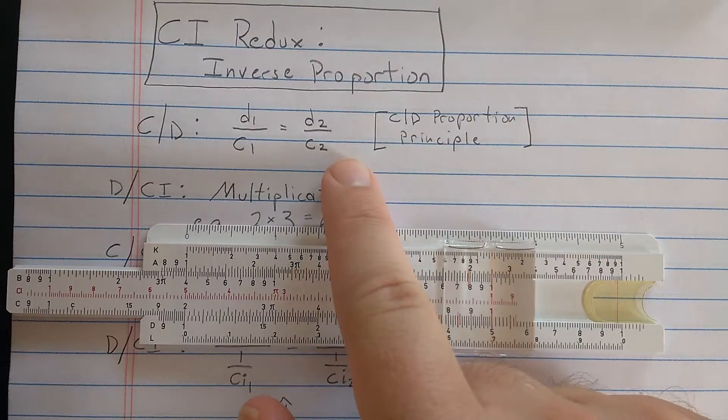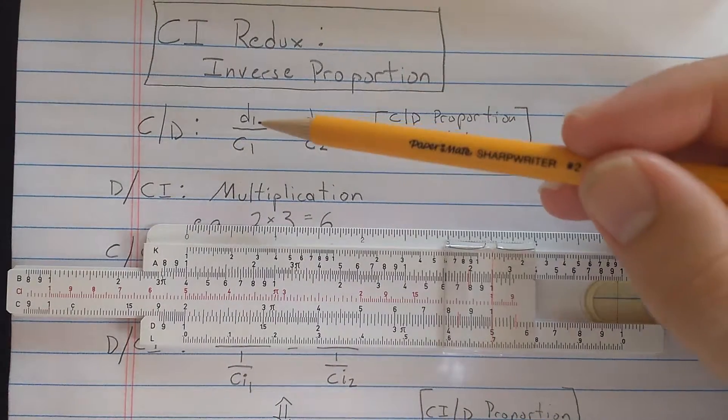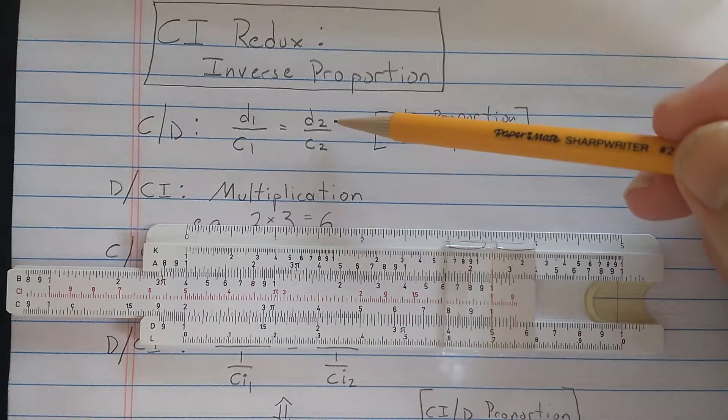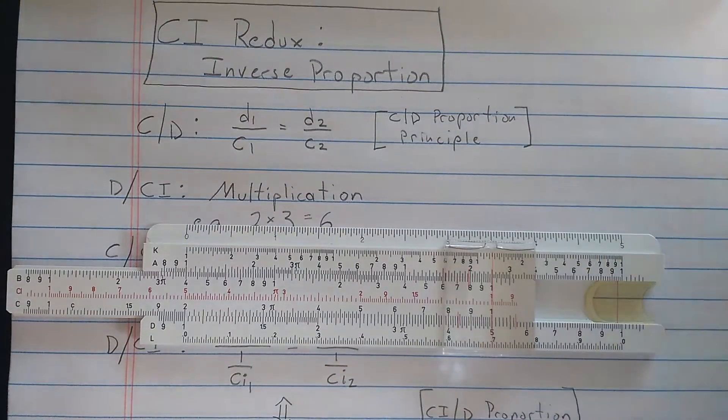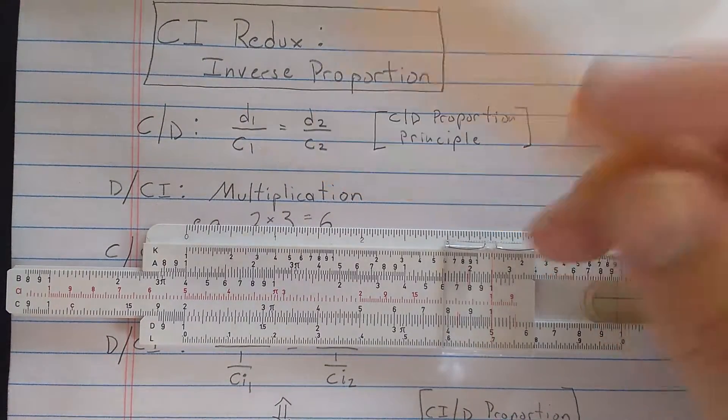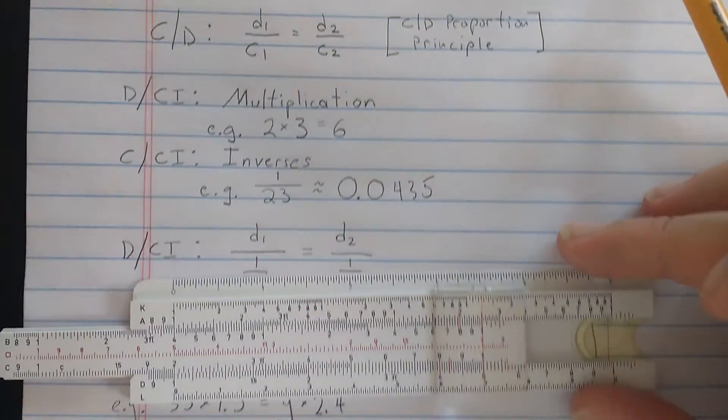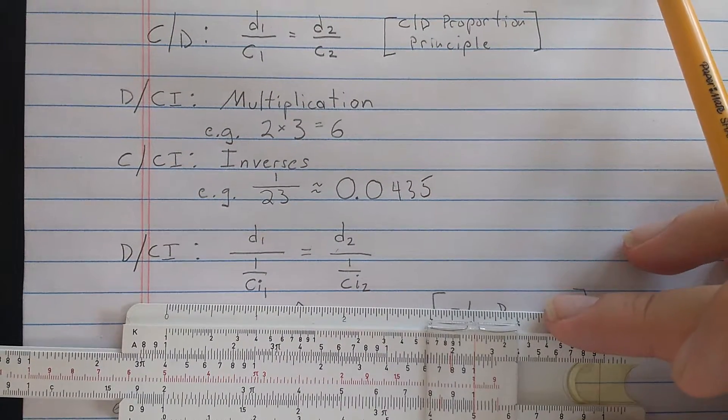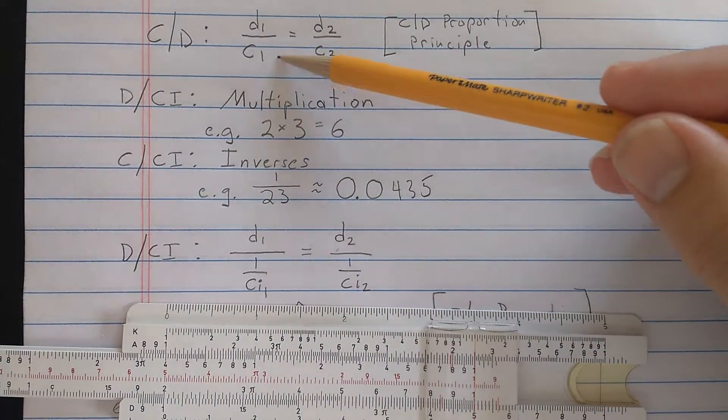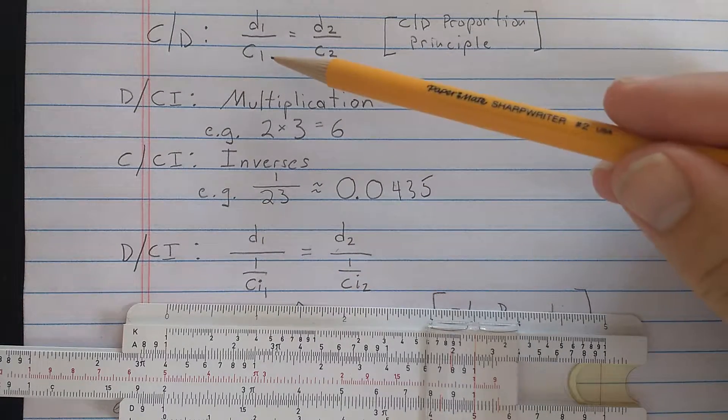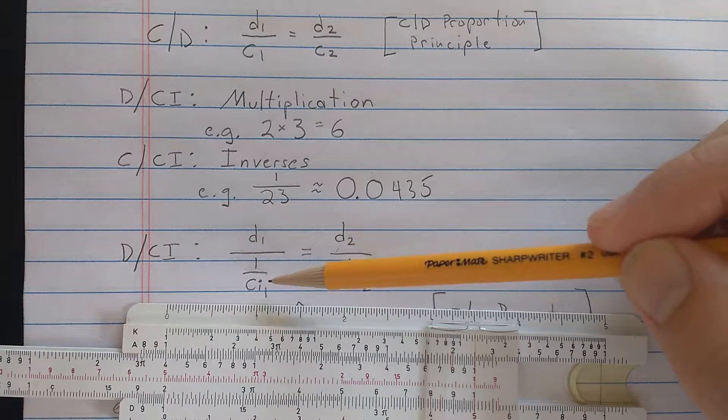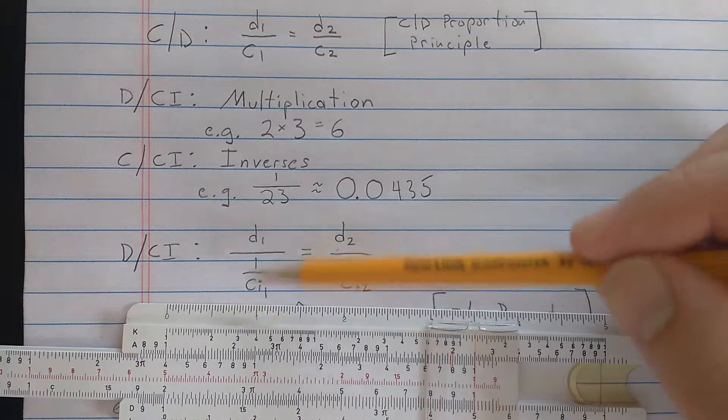Now, we're going to change this up slightly. So here's the idea, right? I take D1 aligned with C1 and D2 aligned with C2, and I can solve this proportion. But if I change to the CI scale instead of the C scale versus the D scale, then of course, it computes the reciprocals of these numbers.